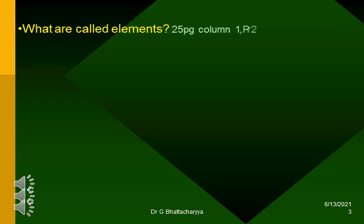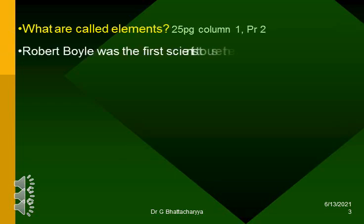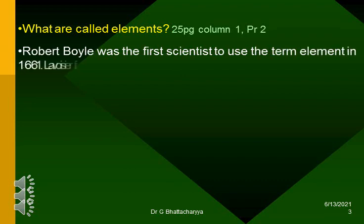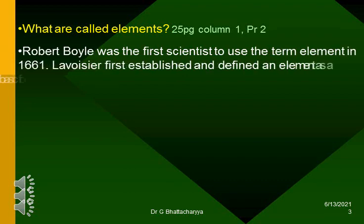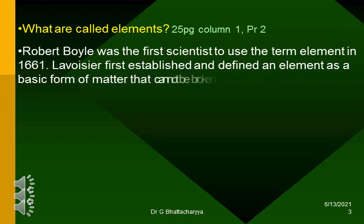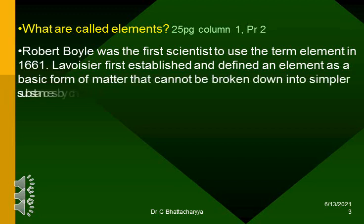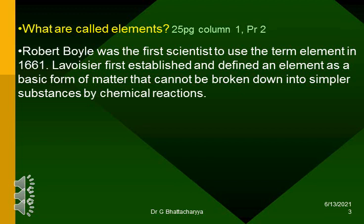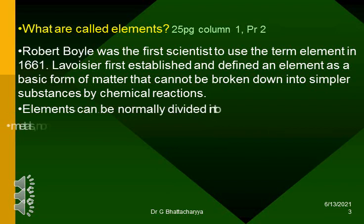What are called elements? Robert Boyle was the first scientist to use the term element in 1661. Lavoisier first established and defined an element as a basic form of matter that cannot be broken down into simpler substances by chemical reactions. Elements can be normally divided into metals, non-metals, and metalloids.